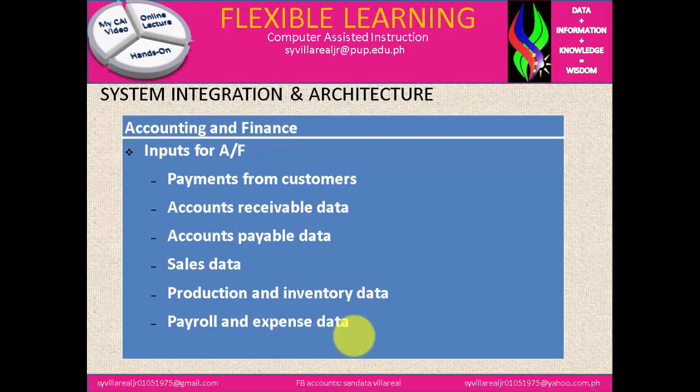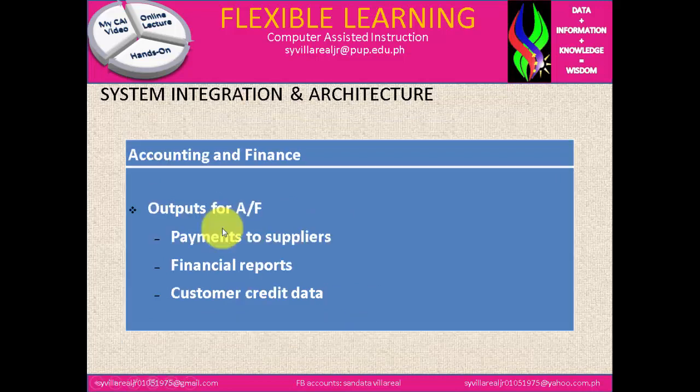Under accounting and finance, the inputs for AF include: payments from customers, accounts receivable data, accounts payable data, sales data, production and inventory data, and payroll and expense data. The outputs for accounting and finance include: payment to suppliers, financial reports, and customer credit data.